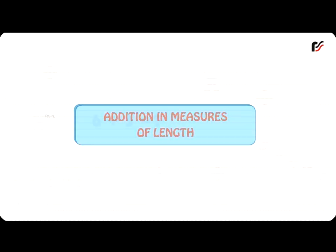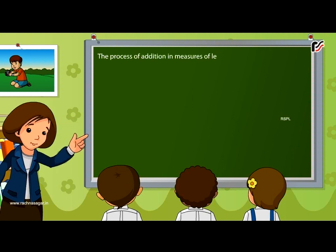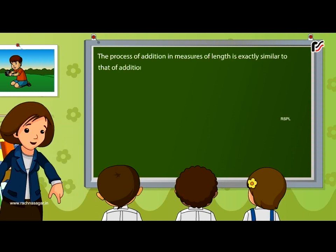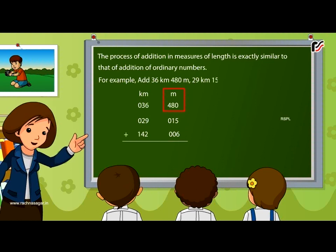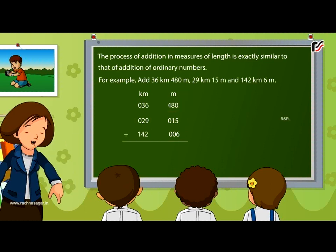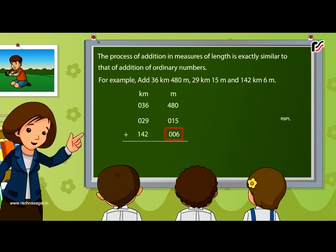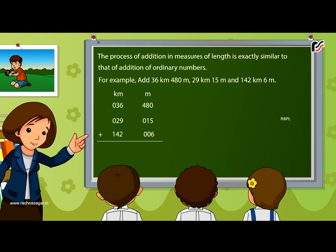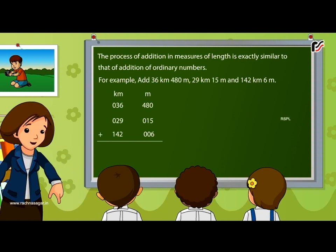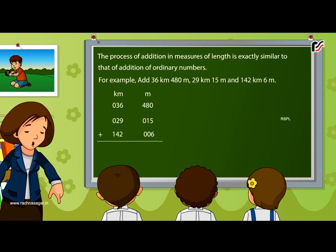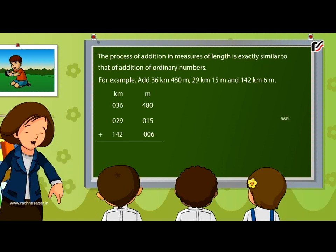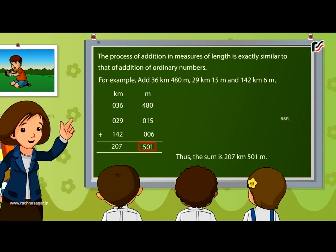Addition in Measures of Length. Arrange the figures in km and m columns respectively. Remember to put zeros in the missing spaces. Add the figures in the m column first, then add the figures in the km column. Thus, the sum is 207 km 501 m.